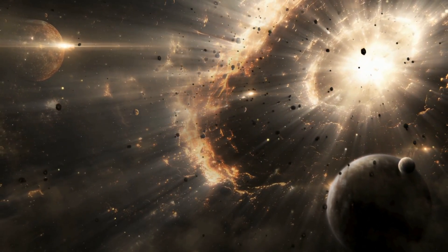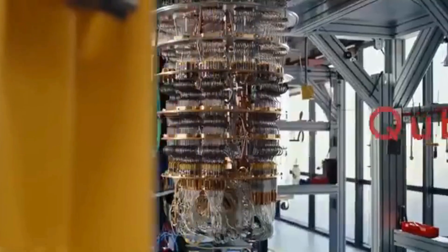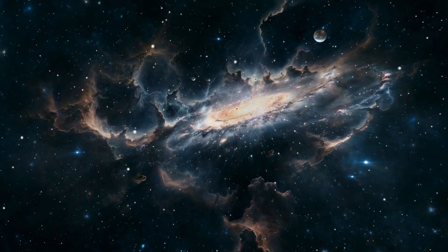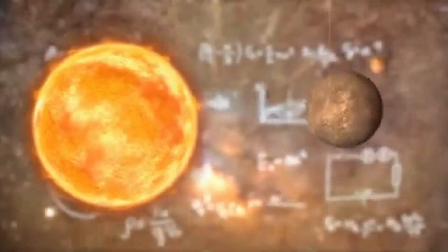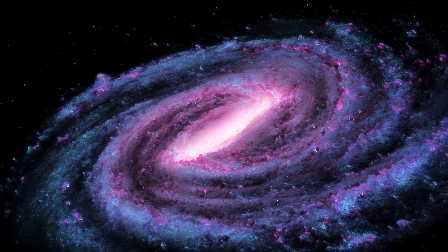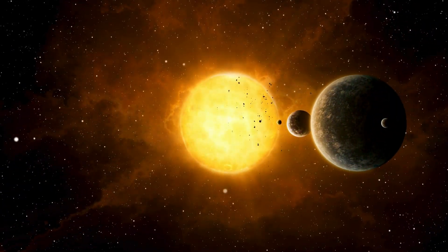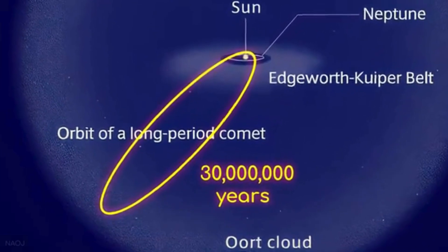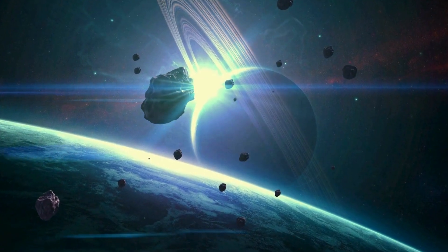The Planet Nine hypothesis wasn't born yesterday. It was first proposed in 2016 by astronomers at Caltech, who noticed something bizarre: a group of distant Kuiper Belt objects all shared oddly-aligned orbits, as if something massive were herding them. The mass suggested a planet — big, dark, and distant. But finding it was the problem. The outer solar system is vast, dark, and incredibly difficult to survey. Traditional telescopes struggled to pick up such a faint object against the cosmic background.